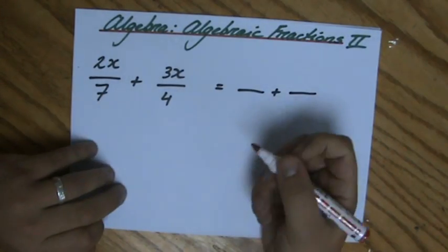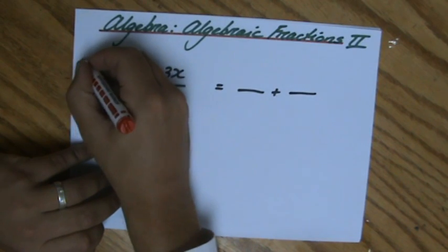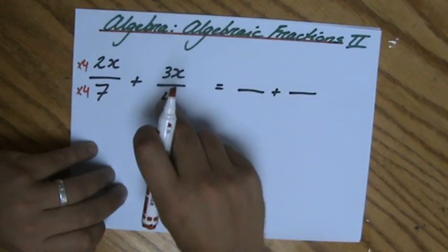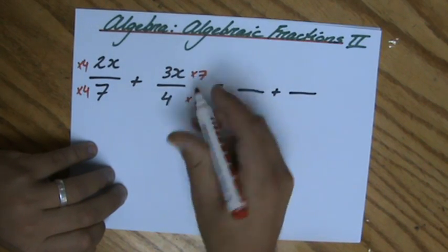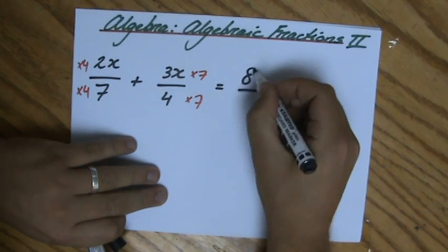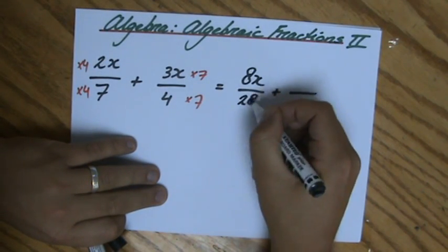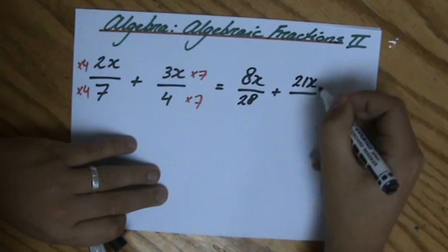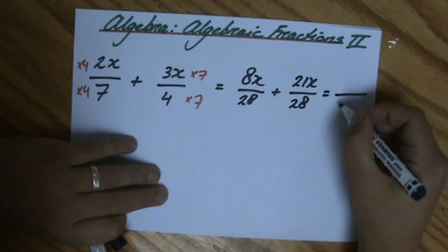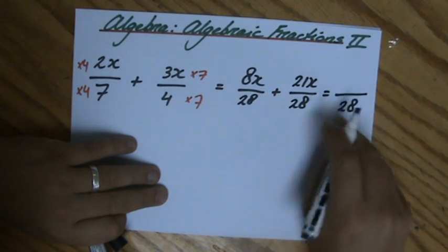So I'm going to multiply that fraction by 4/4, which is the denominator there, and this fraction by 7/7, and I will get 8x/28, and I'm going to get 21x/28.